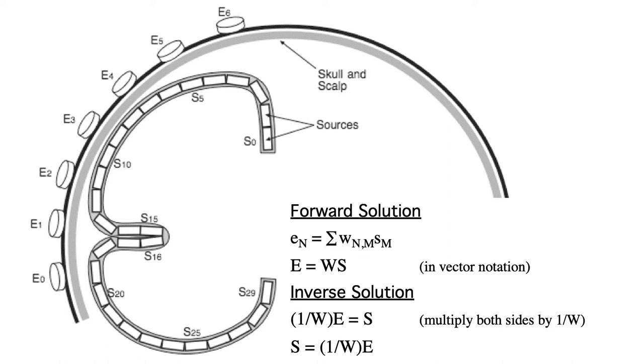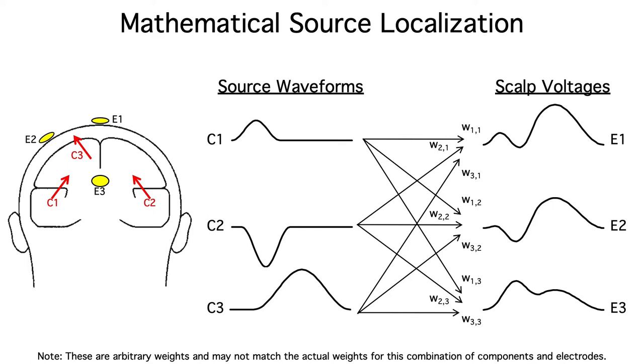In this lecture, I'm going to focus on this second approach, which is often called source localization. Let's start by taking a closer look at how the voltages from the sources form a weighted sum at any given scalp electrode.